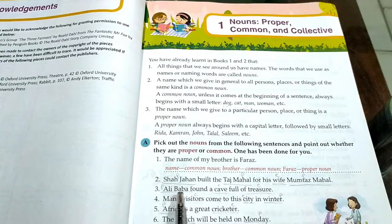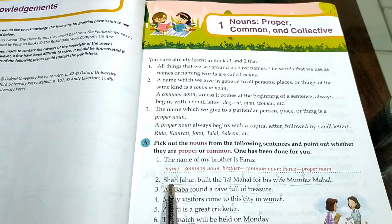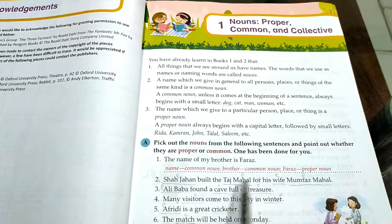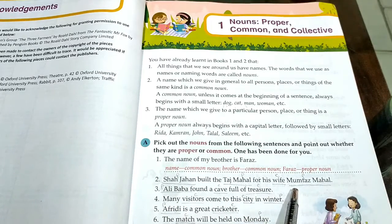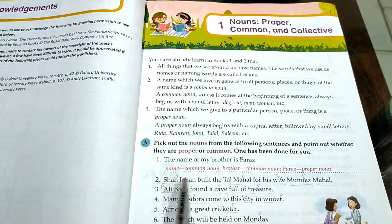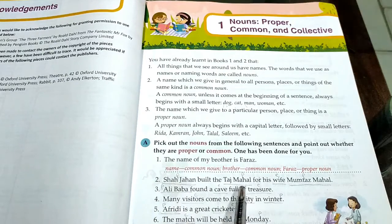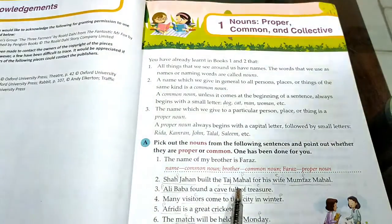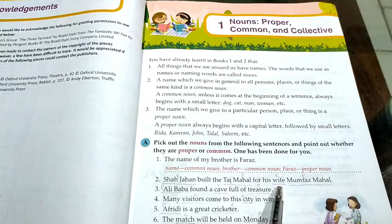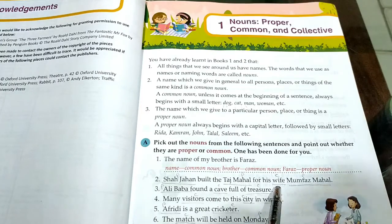For example: 'Shah Jahan built the Taj Mahal for his wife, Mumtaz Mahal.' To Shah Jahan — proper noun hai. Taj Mahal — proper noun hai. Wife — common noun hai.